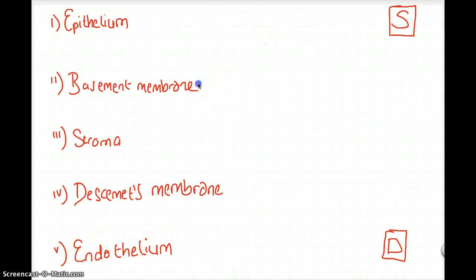There's not a lot to mention about these two, apart from that the basement membrane contains Bowman's capsule. Easy to remember as both start with a B. The stroma is the thickest component of the cornea, accounting for 90% of the corneal thickness.